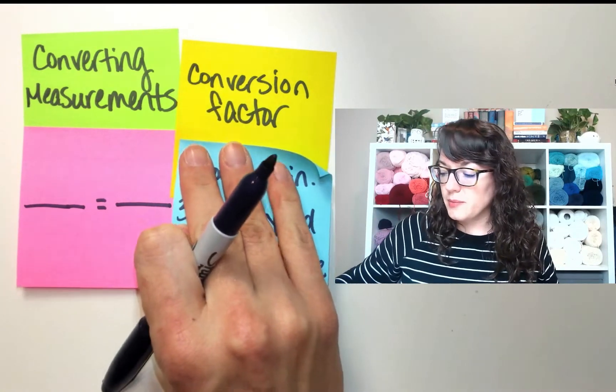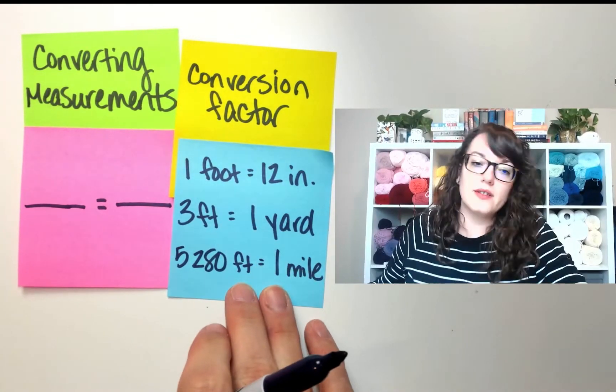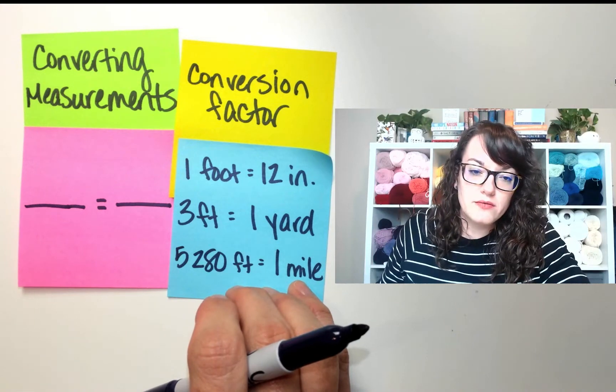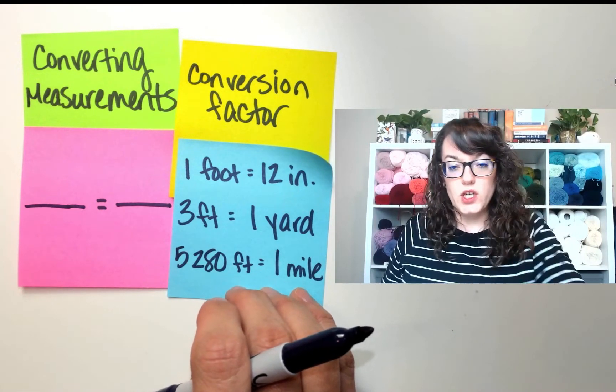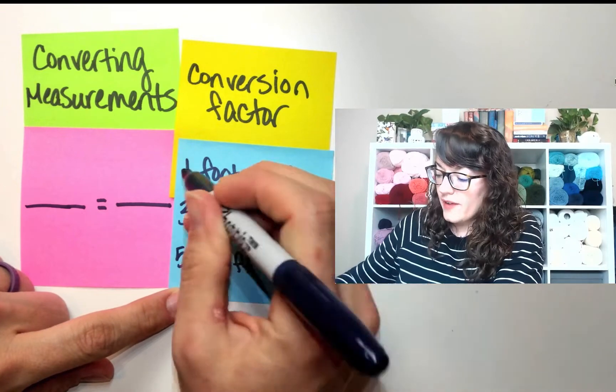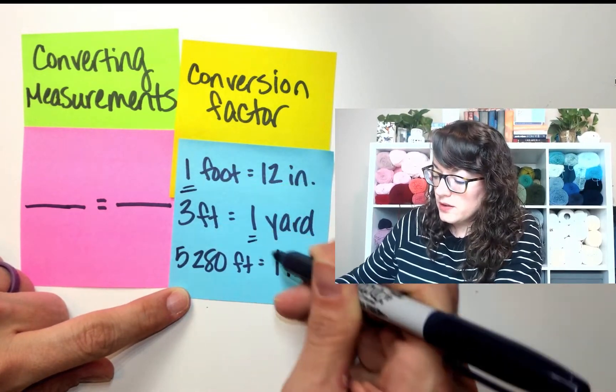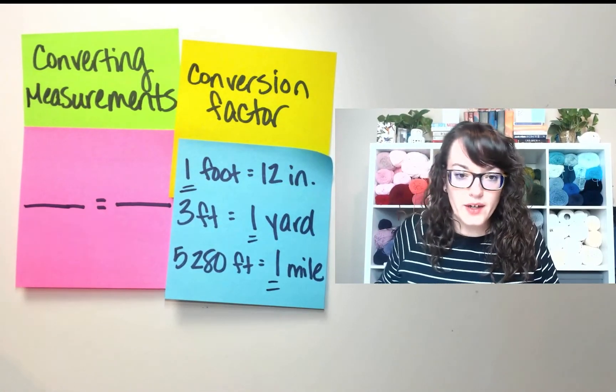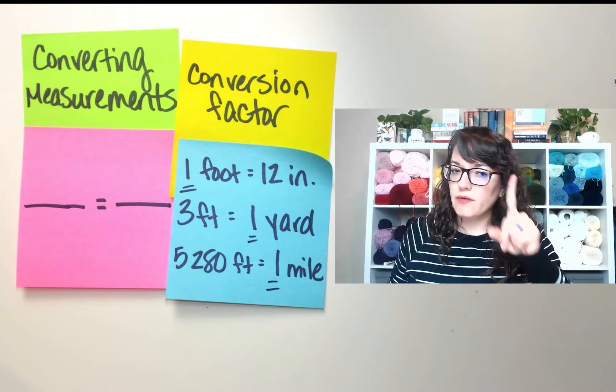Here are some examples of conversion rates. One foot is 12 inches. Three feet is one yard. Notice that in the conversion factor there's a one somewhere. That's how you know, oh that's my conversion factor.